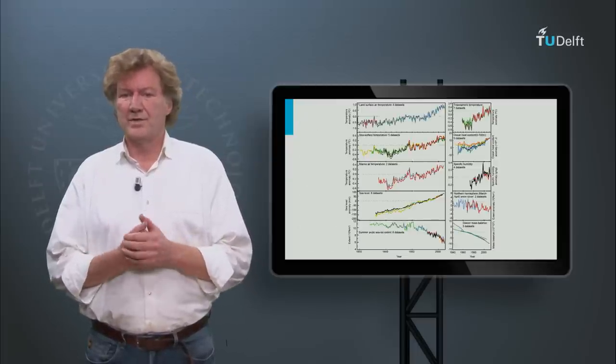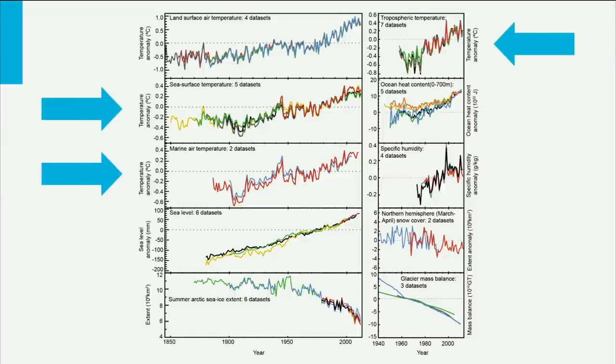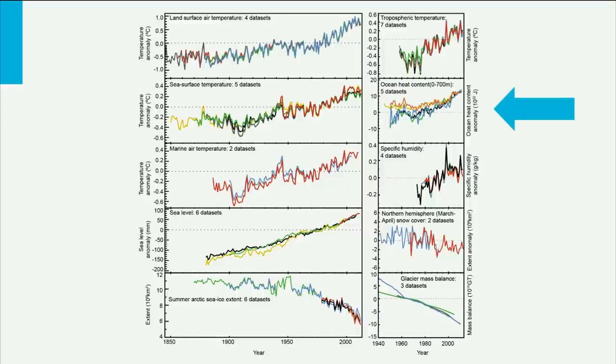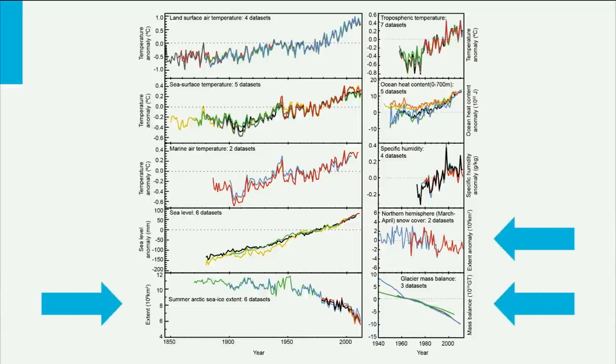Not only the land surface air temperature has increased — warming was also observed at higher altitudes in the atmosphere, at the sea surface, and the air above the sea. Furthermore, we saw an increase of the heat content of the oceans and an increase of water vapour in the atmosphere. The sea level has gone up, the Arctic ice content is declining in the summer, there seems to be less snow cover on the northern hemisphere, and the glaciers are losing mass.